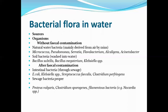Coming to the sources of microorganisms in water — from where they are coming. Without fecal contamination, some organisms can enter water sources through pipes supplying drinking water. Natural water bacteria are mainly derived from air by rains. Microorganisms enter natural water bodies through rain carrying microorganisms from air. Examples are Micrococcus, Pseudomonas, Serratia, Flavobacterium, Alkalogens, and Acinetobacter.